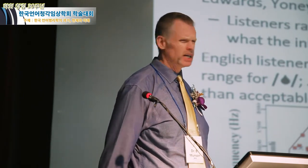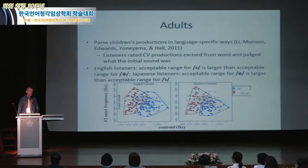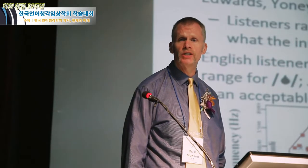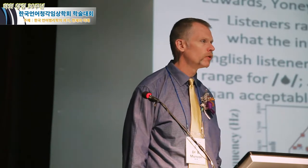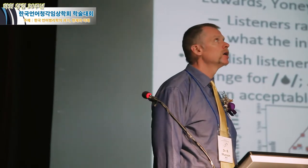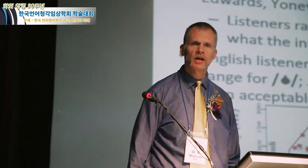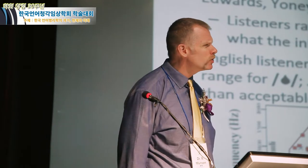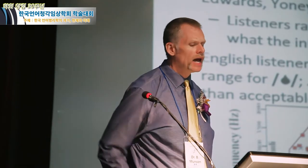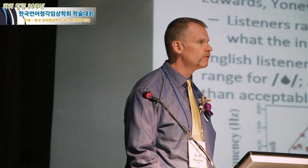Why is that interesting? In English, S is acquired before SH, but in Japanese, SH is acquired before S. My colleagues Edwards and Beckman were interested in how frequency of occurrence of sounds relates to acquisition patterns, but they couldn't explain this English/Japanese difference by frequency of occurrence. That led us into understanding how adults' perception of children's speech might drive cross-linguistic differences in acquisition.